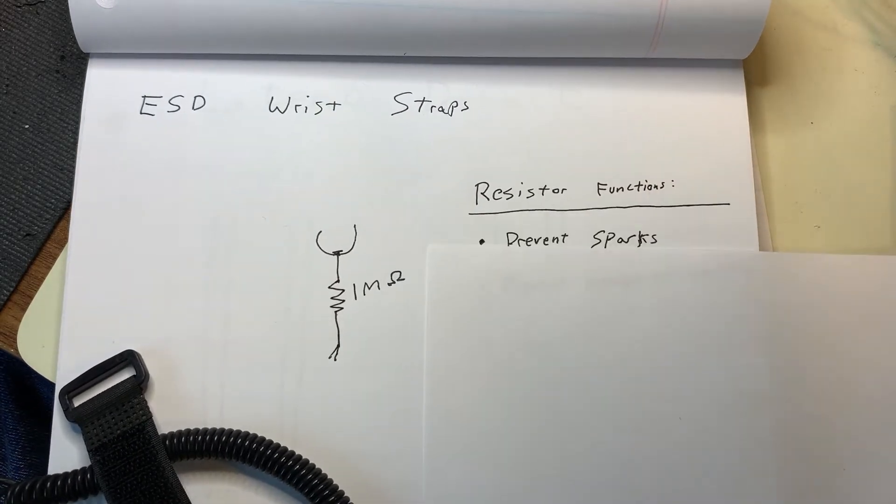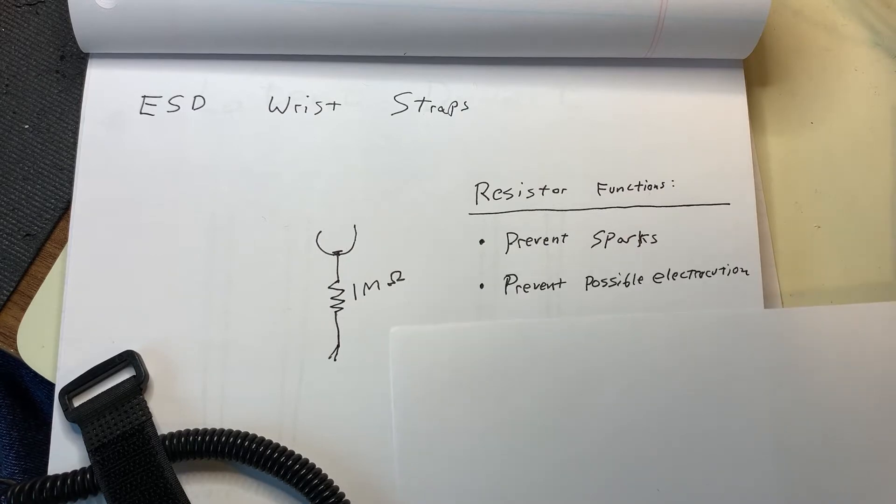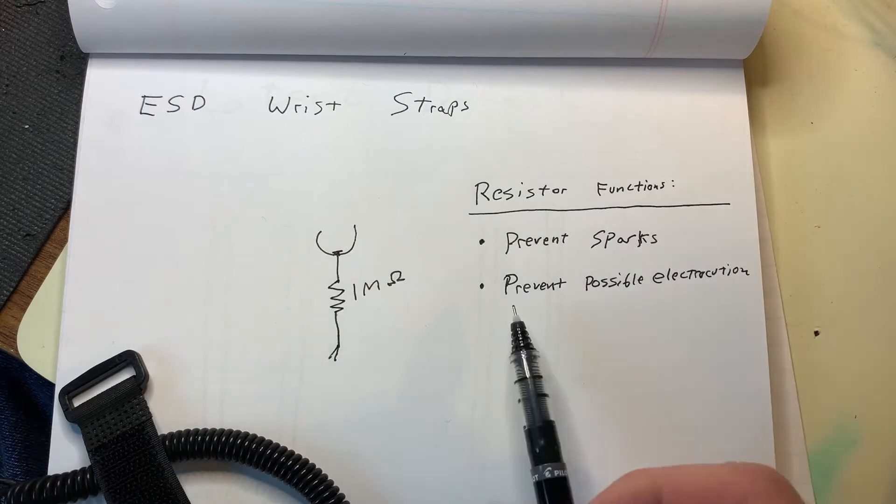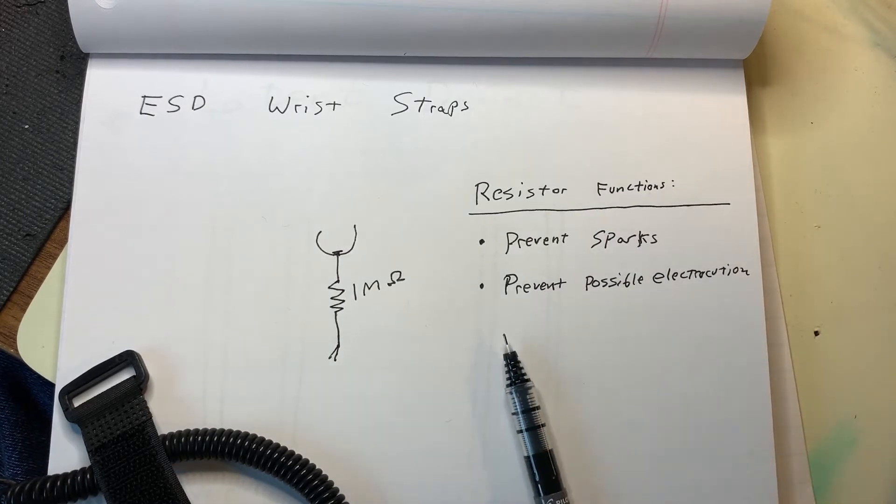For one, it prevents sparks from occurring. The second purpose is to prevent possible electrocution, and this has to do with how the wrist strap works when it's attached to a piece of equipment.